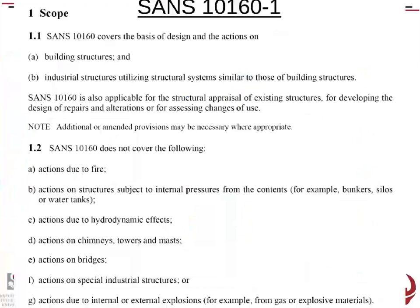We've got various guidelines from SANS 10160 Part 1. Part 1, the basis and loading of design, covers building structures and industrial structures, but does not cover actions due to fire, internal pressures, hydrodynamic loads, chimneys, bridges, etc. Don't use this code to design a bridge, and don't use it for actions due to internal or external explosions. Every code has a scope — don't use it where it's not designed for.